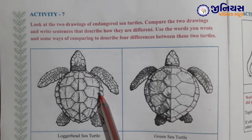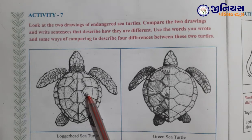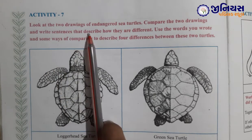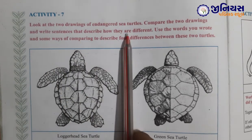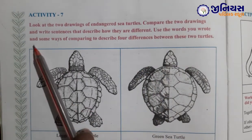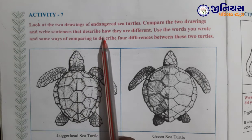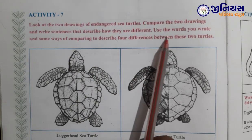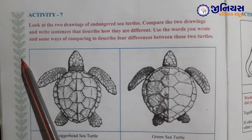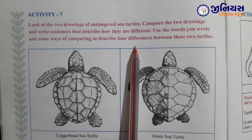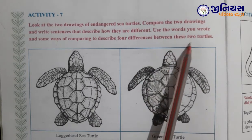Good morning students. In the last lecture we had completed up to activity number six. Now let's see activity seven. Look at two drawings of endangered sea turtles, compare the two drawings, and write sentences that describe how they are different. Use the words you wrote and some ways of comparing to describe four differences between these two turtles.